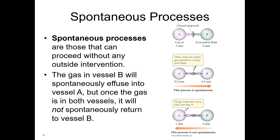Let's define a spontaneous process. A spontaneous process is going to be one that will occur without any outside intervention. Here is a physical example: I've got a gas in this flask and the stopcock is closed and this flask is evacuated. If I open the stopcock, gas is essentially going to rush from flask A into flask B until they're equilibrated. That is a spontaneous process — I open the stopcock and it happens.